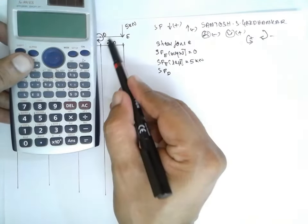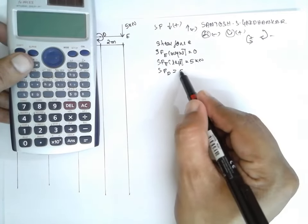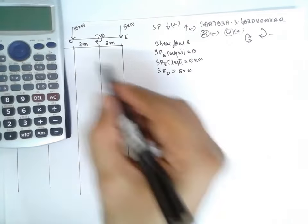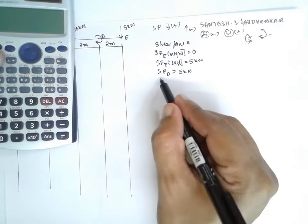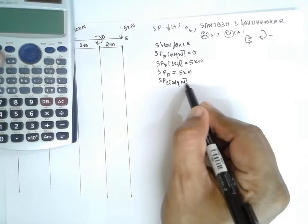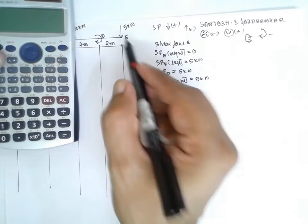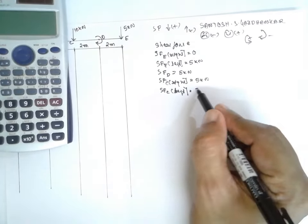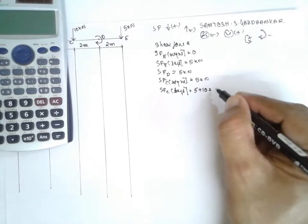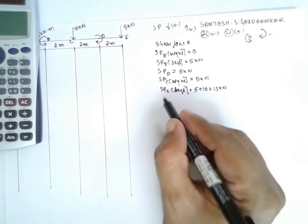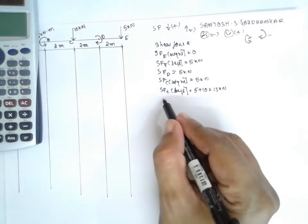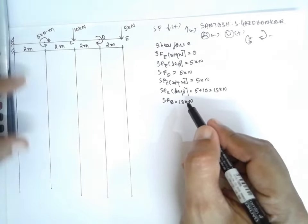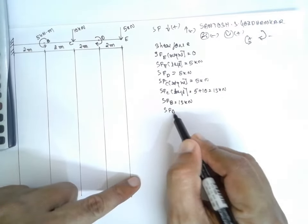At C there is a point load, so we consider both right and left. SF at C right equals the previous value, 5 kilonewtons. SF at C left equals 5 plus 10, which is 15 kilonewtons. Next, at B there is no load, only a couple, so the shear force is unaffected — B remains 15 kilonewtons. At the fixed end A, there is no additional load, so SF at A equals the previous value, 15 kilonewtons.